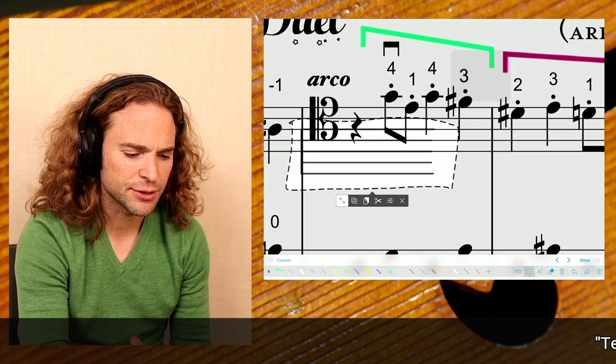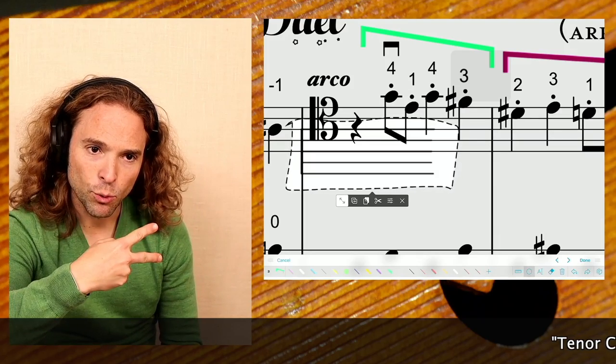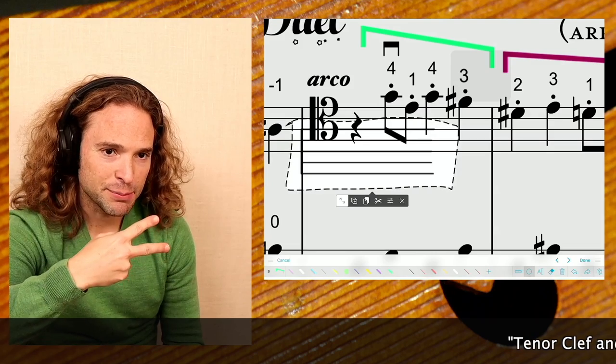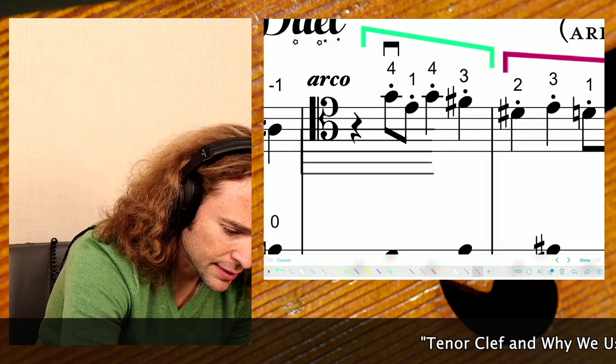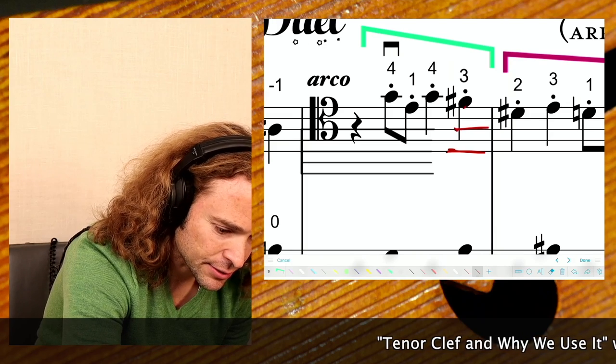This is the tenor clef that we're looking at. As you see, there's two extra lines below it. One and two. Throwing up them deuces. And so, if I were to draw, these would be strings. These would be strings.